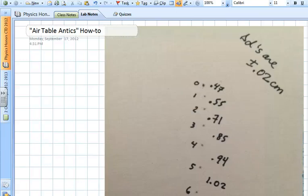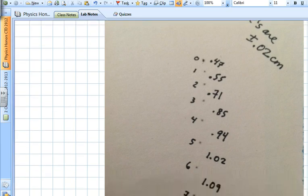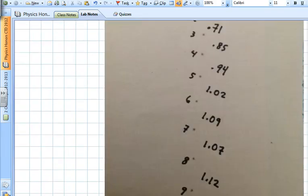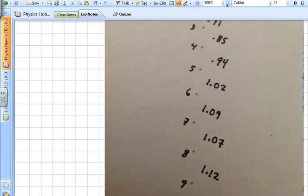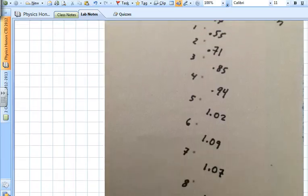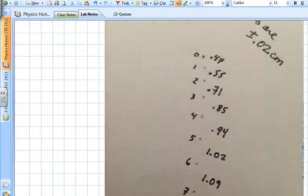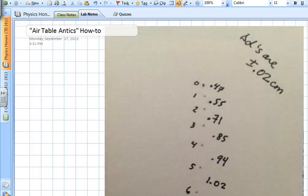Okay, so welcome back everyone. In this video I'm going to explain how to analyze the data from the Air Table Antics Lab. And what I've got here is some sample data from a trial that I took a short while ago. You'll see the dots labeled 0, 1, 2, 3, 4, 5, and so on. This is just a small portion, it goes up to like 25, 30, 40. And next to it are the distances.